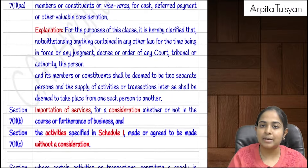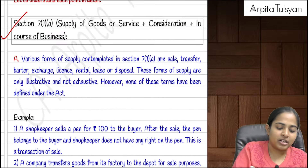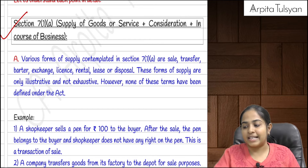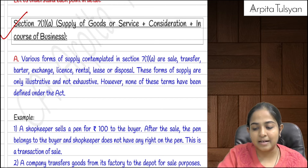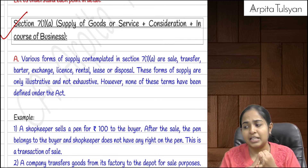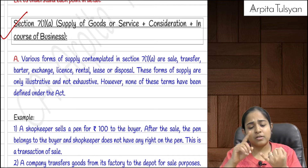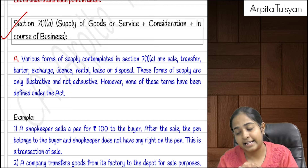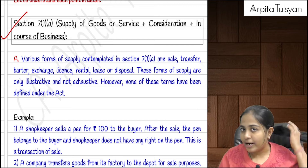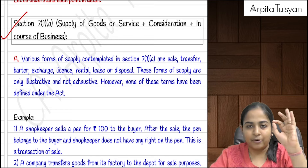This is a summary table where all the provisions have been included. Let's start understanding everything in detail. Section 7(1)(a) talks about what will be considered as a supply. Supply is a very broad thing — different types include sale, transfer, barter, exchange, license, rental, lease, disposal, and so on. These terms are purely illustrative, not exhaustive.